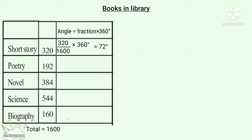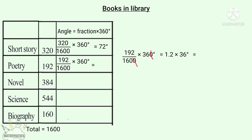Now for Poetry. The fraction is 192 by 1,600. So the angle is 192 by 1,600 into 360. The denominator zeros cancel. 192 by 1,600 gives 1.2. 1.2 into 36 degrees is equal to 43.2 degrees.